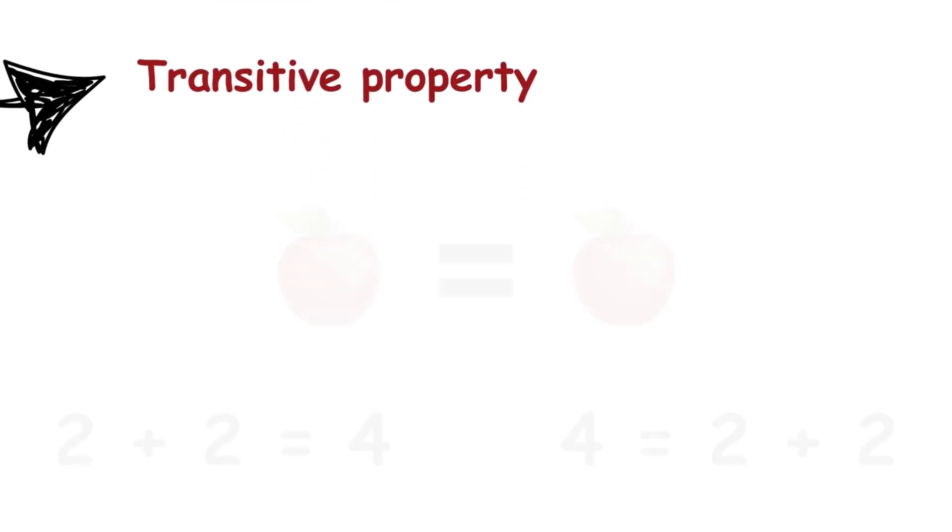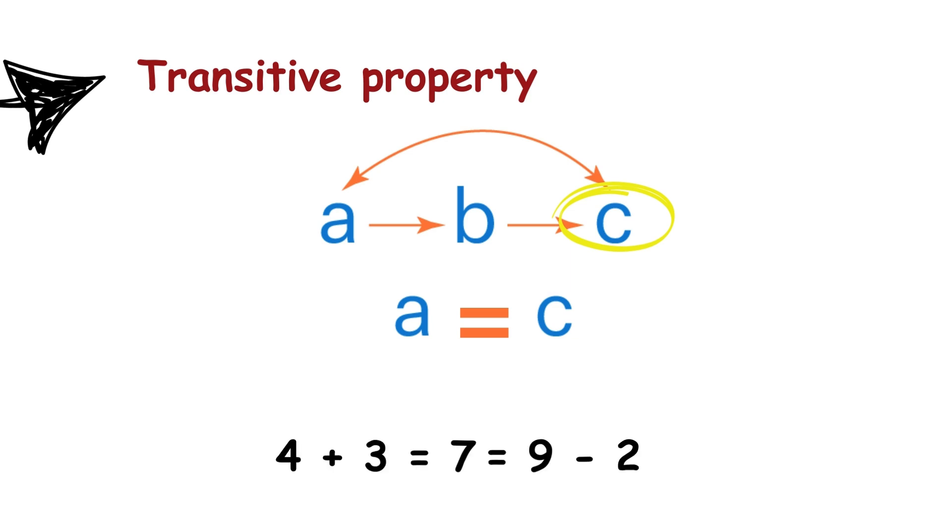Three, transitive property. If something equals something else, and that second thing equals a third thing, then the first thing equals the third thing. For example, if four plus three equals seven, equals nine minus two, then four plus three equals nine minus two.